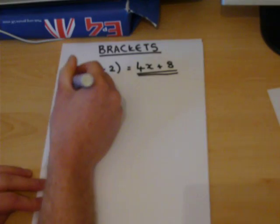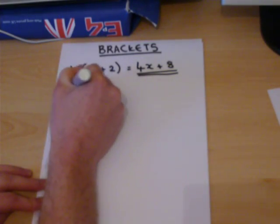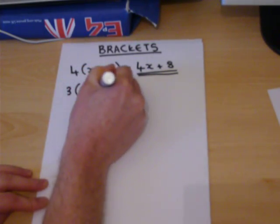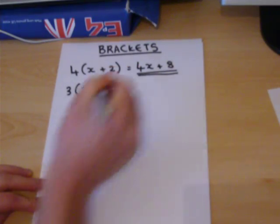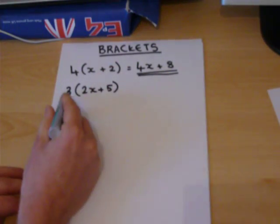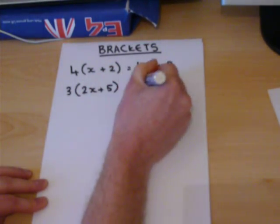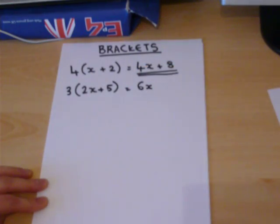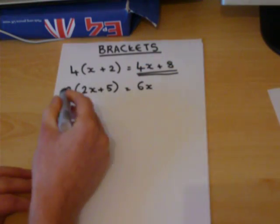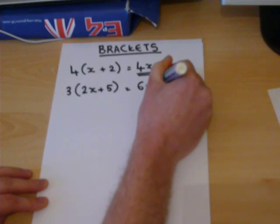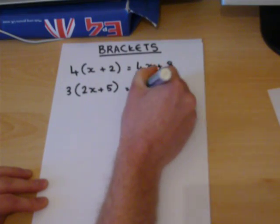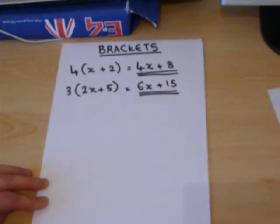Similarly, we might have 3 bracket 2x plus 5. We do 3 times 2x, which is 6x, and 3 times 5, which is 15.